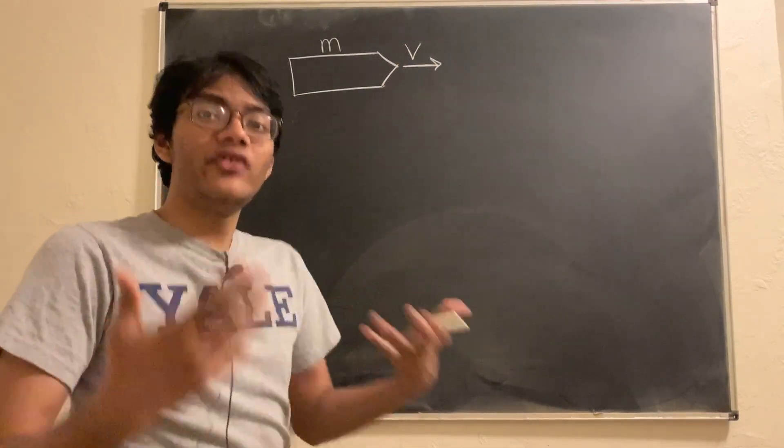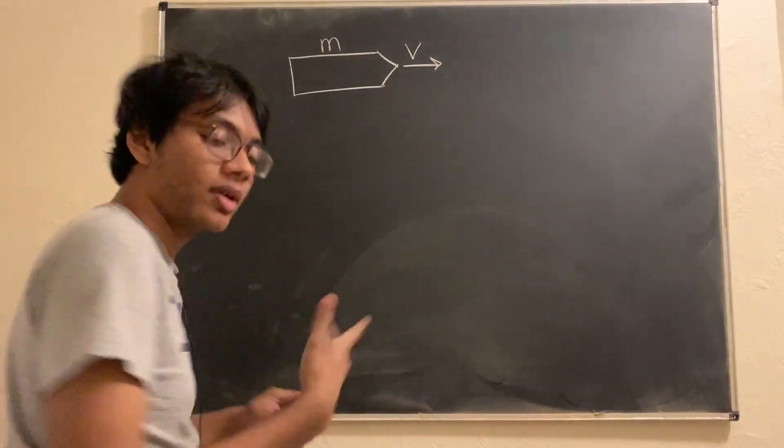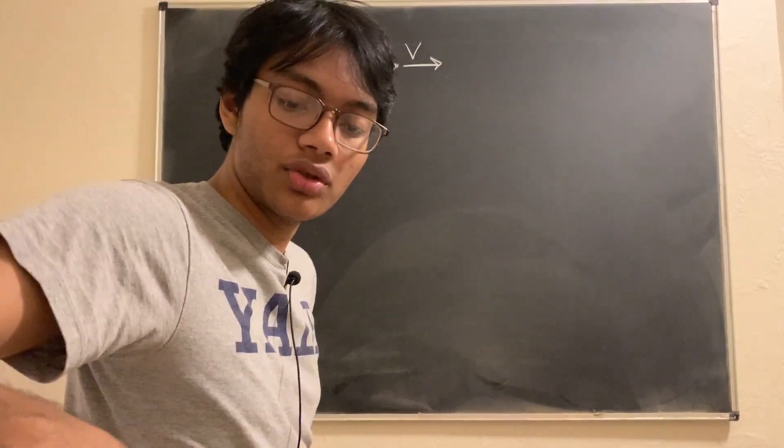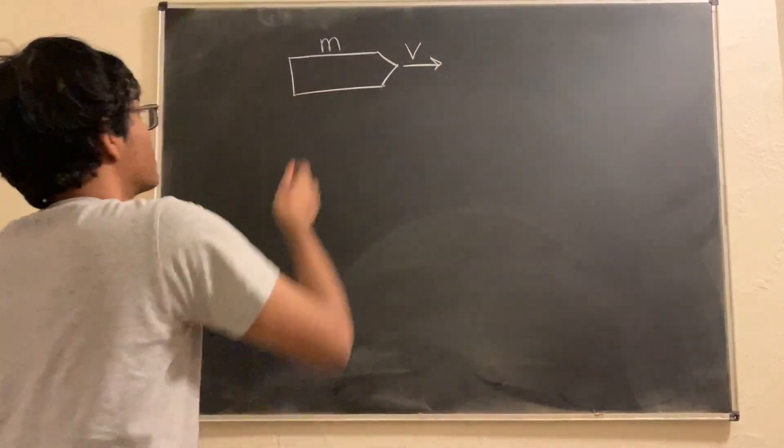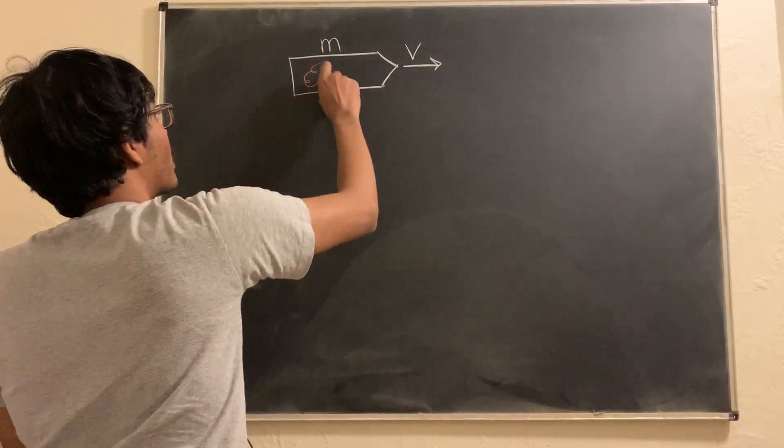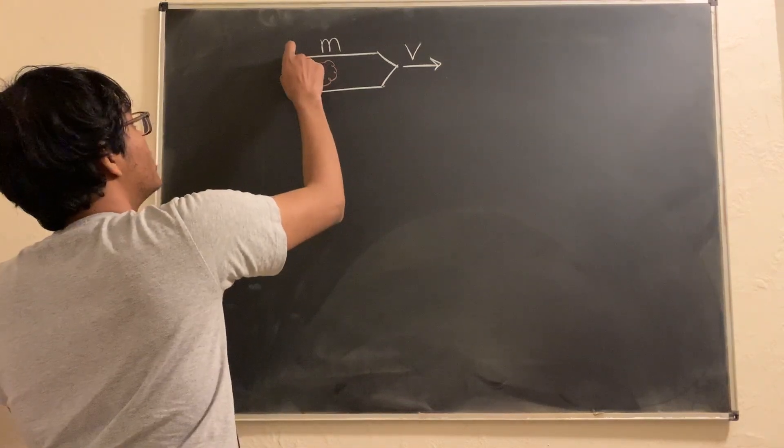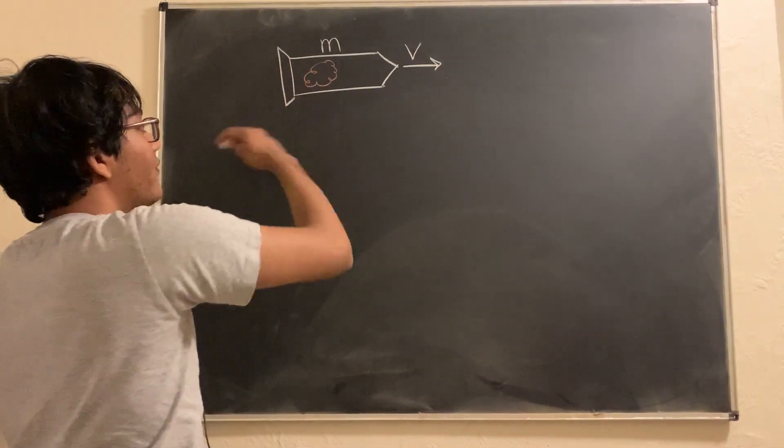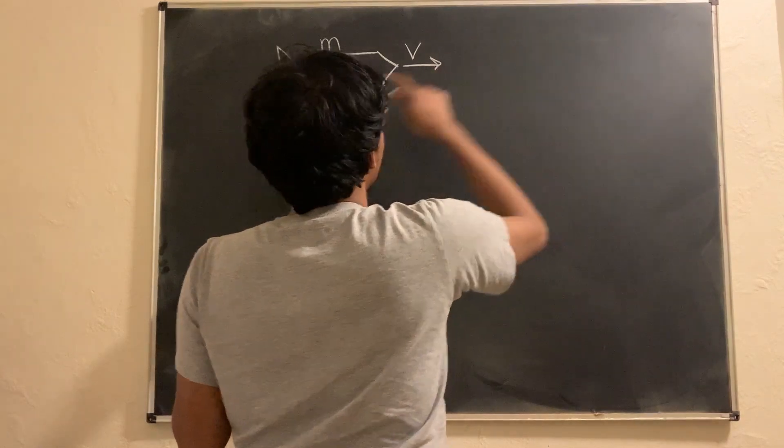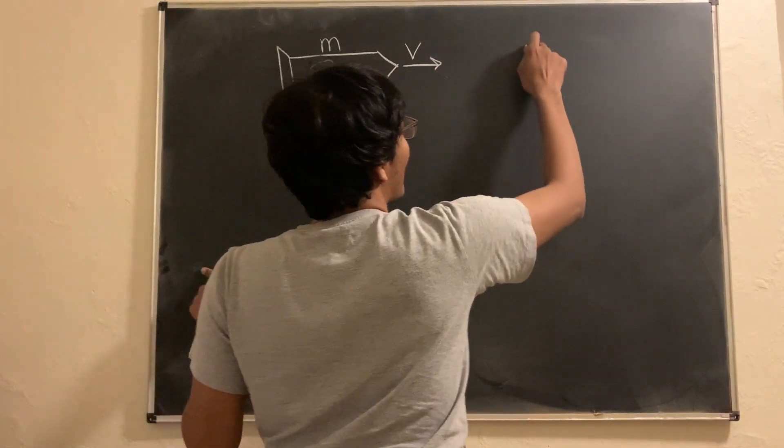Now, our rocket is carrying fuel, right? It's carrying some amount of fuel that I'm going to show you in brown. So, here's the fuel that my rocket is carrying. Now, of course, after the rocket ejects the fuel out of its fuel tank, what's going to happen? This is before. This is after.